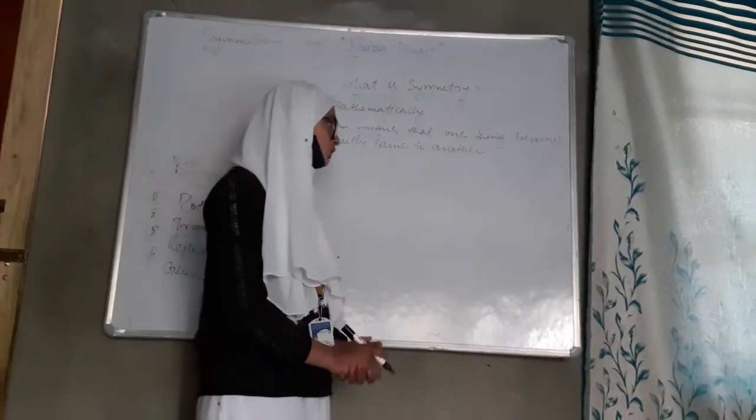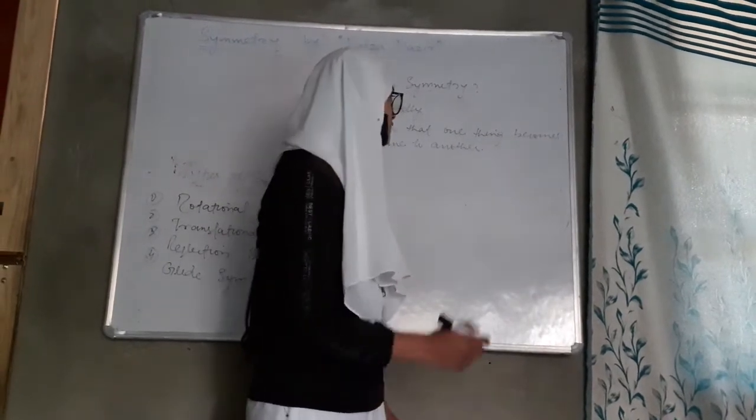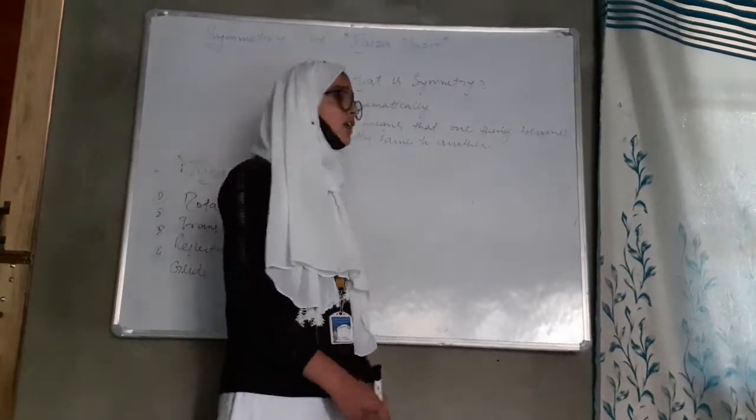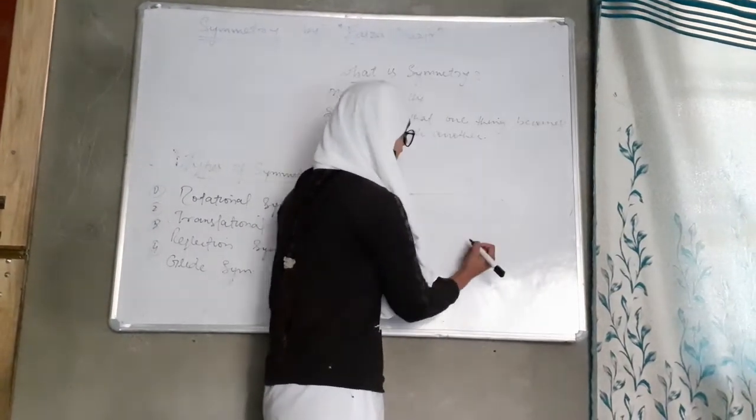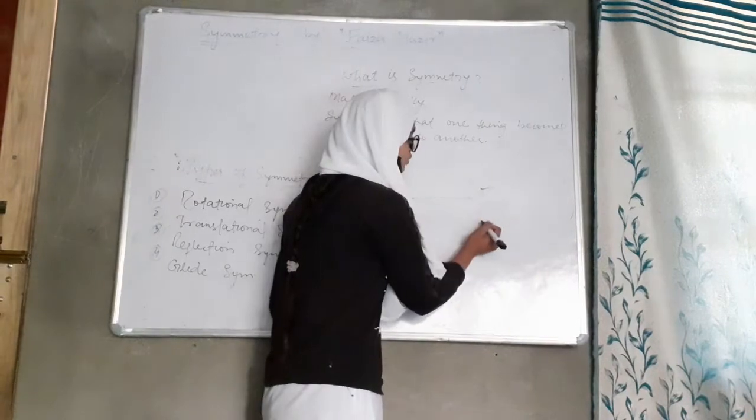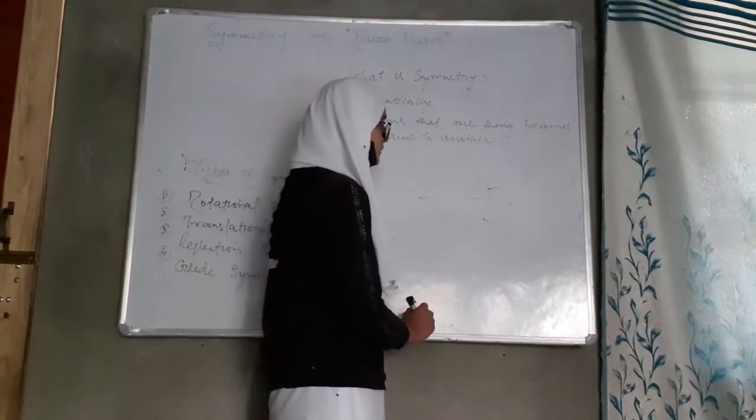Symmetry mathematically, if there is a circle, then we divide it in two parts. This part and this part is the same. This is symmetry.